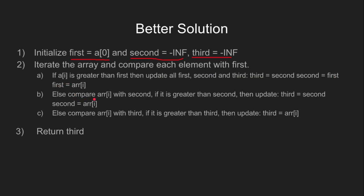Else, if the ith element of the array is greater than 'second', then we update 'third' and 'second'. Else if it is greater than 'third', then we update 'third'. At last, we return 'third'.